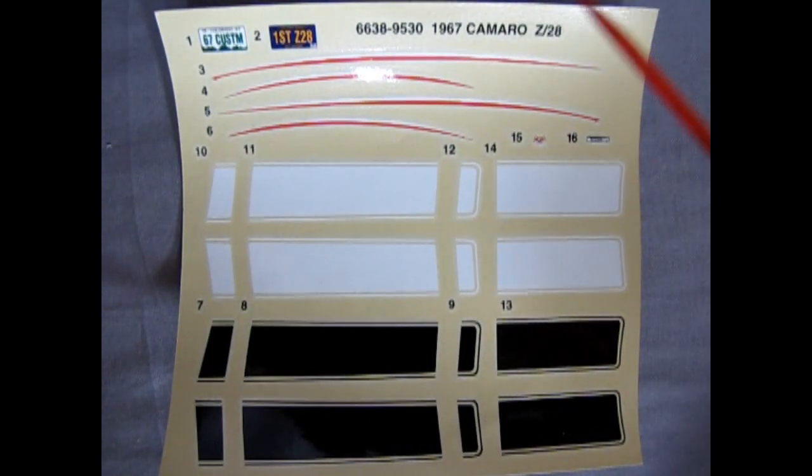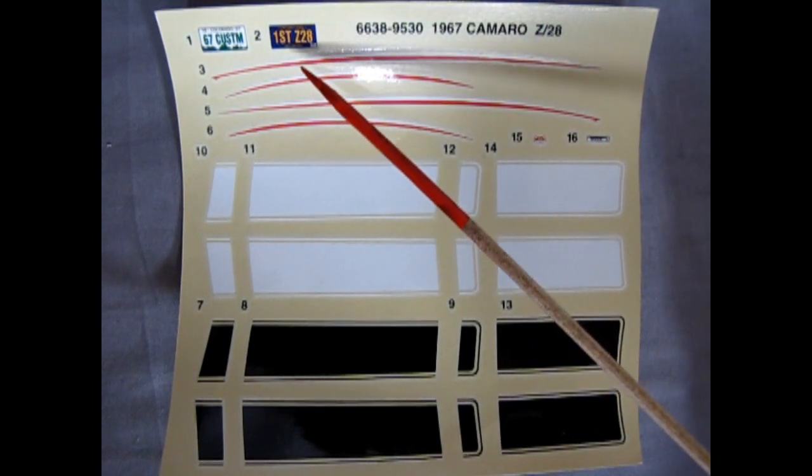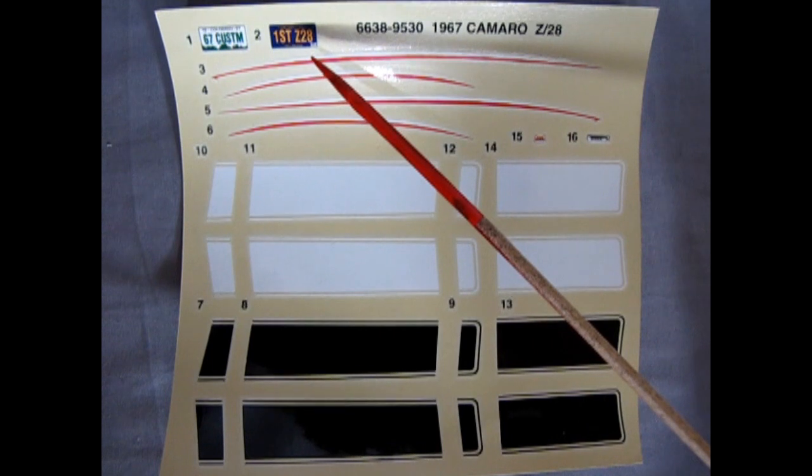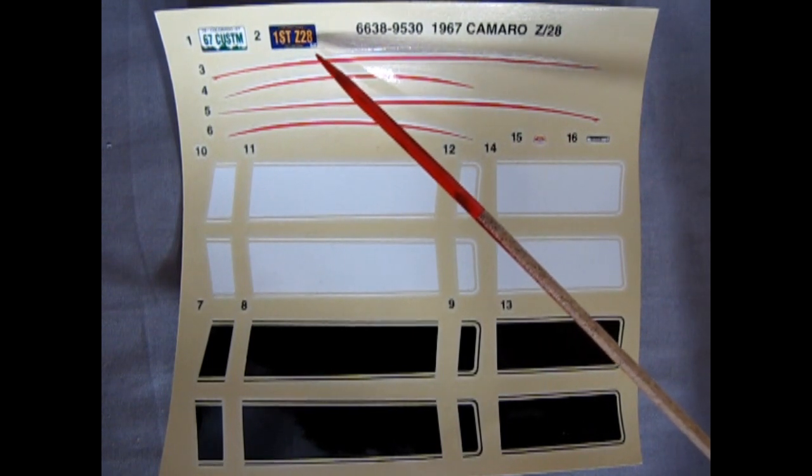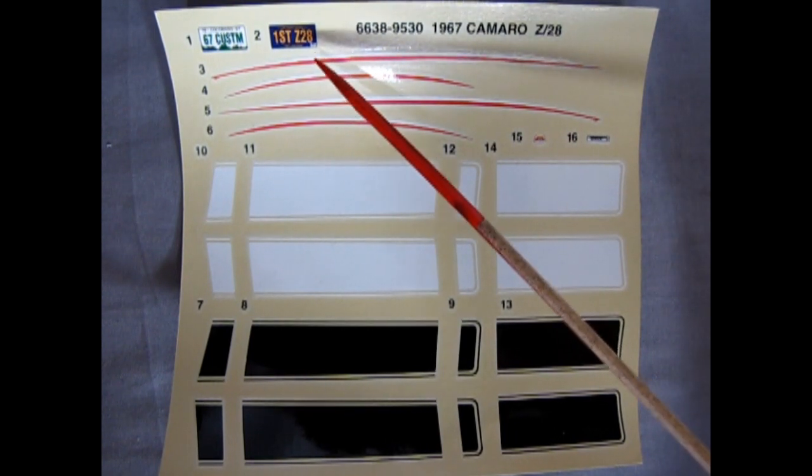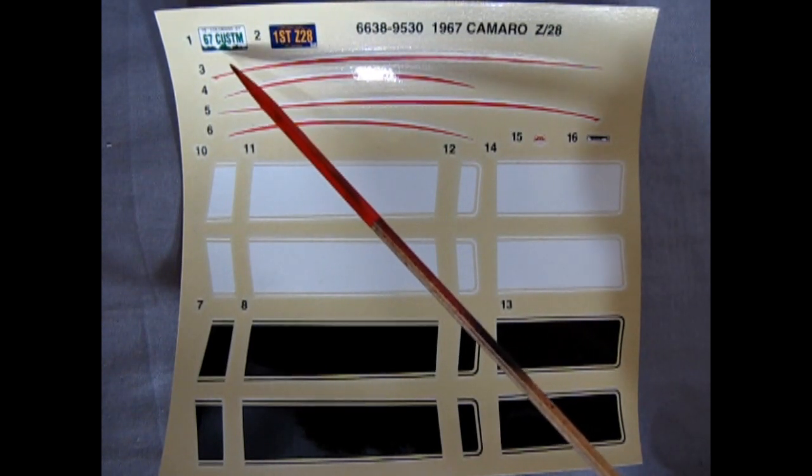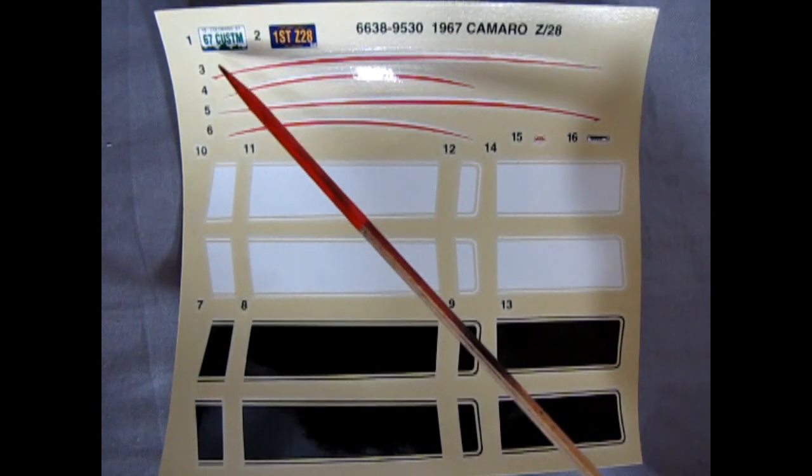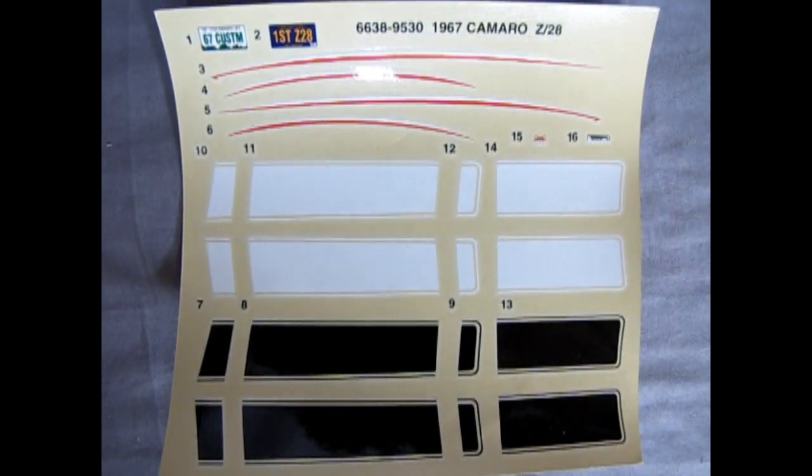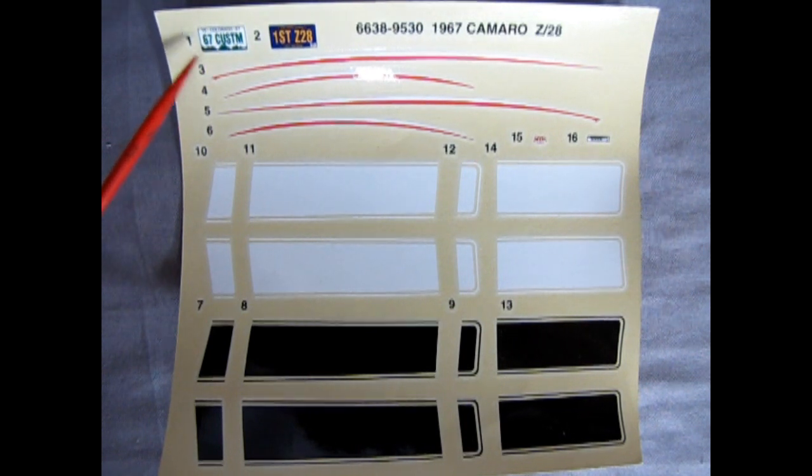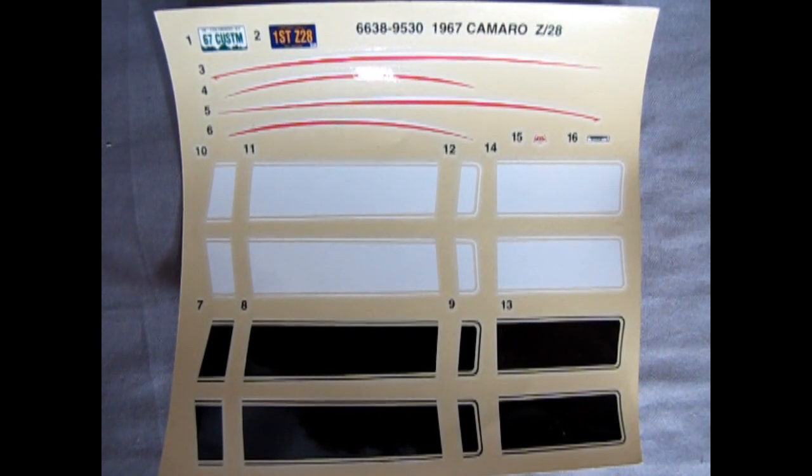And now we have our decal sheet for our 67 Camaro Z28. And there's an interesting license plate here, which says first Z28. What makes this license plate interesting is it is also from Delaware, which was the first US state. And then here we have a 67 custom license plate from Colorado. And if you remember our 1966 Oldsmobile review, you'll also note that there was a Colorado license plate in there as well. So these cars could be Colorado buddies.